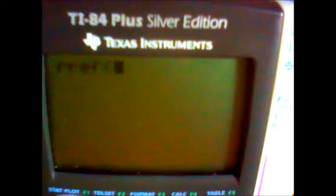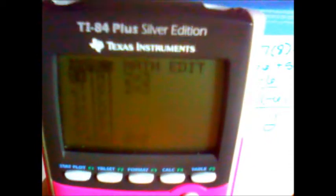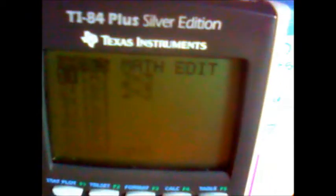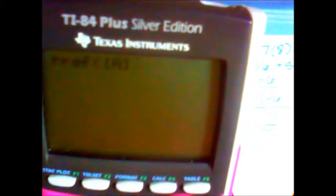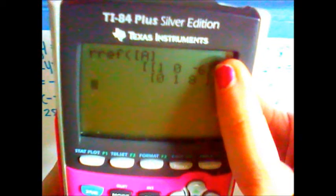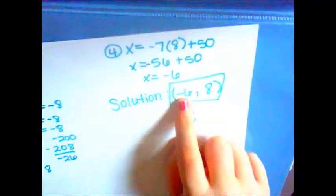Press enter, then press second matrix again, select the one you just entered, and press enter. You get something that looks like this and in the third column will be your answer. So x equals negative 6, y equals 8.